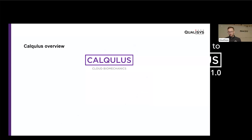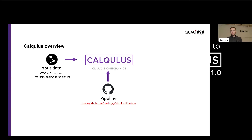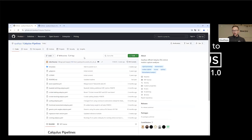Calculus works with input data as a JSON file exported by our software QTM. This JSON file includes marker data, analog data such as EMG, and force plate data. Calculus uses pipelines — you define your analysis in a pipeline made of multiple steps. We try to be as open source as possible, so the pipelines and their steps are stored and available to everyone on GitHub. Here on the Qualisys GitHub page, in front of the Calculus pipeline repository, you can see different pipelines for different analyses.